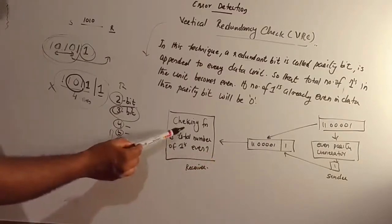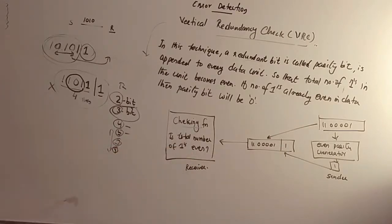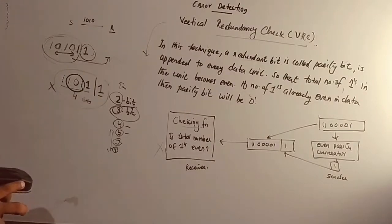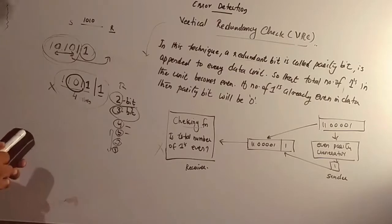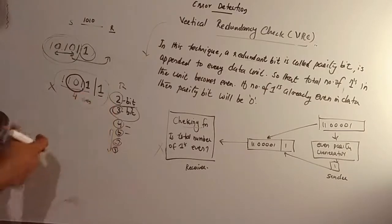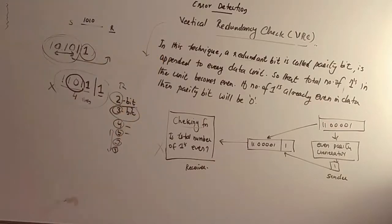Now at the receiver, if the receiver has the checking function, it checks the number of 1s. If the total number of 1s is equal, we accept the data. This is the VRC algorithm. We need to check vertical redundancy check — a simple algorithm. It is efficient for single bit errors, but cannot detect all errors. In the next video, you can also check the error results in the same way.